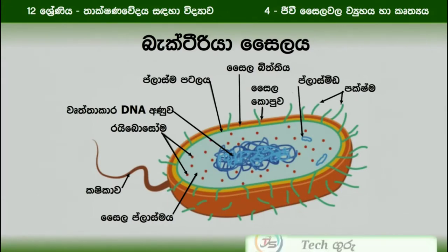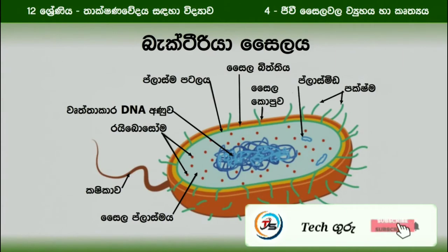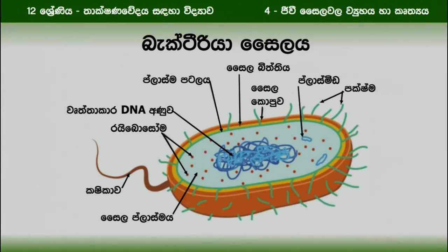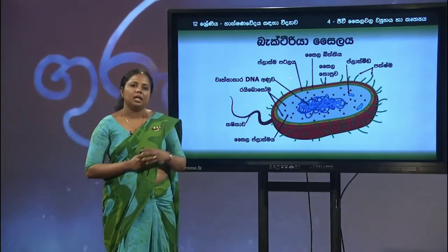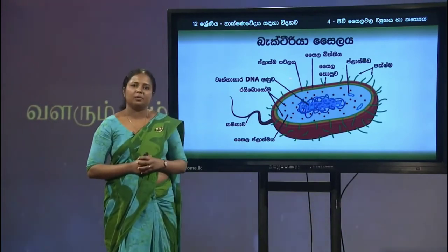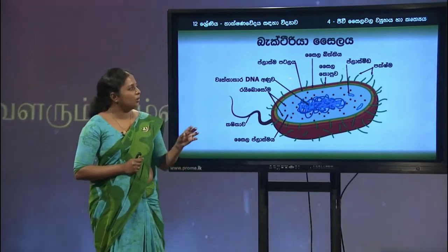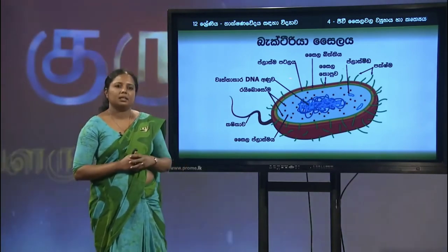This is a cytoplasm. This cytoplasm can be found in the natural way. The bacteria in the plant are in the plant. This plant is a small plant and can be found in the plant.